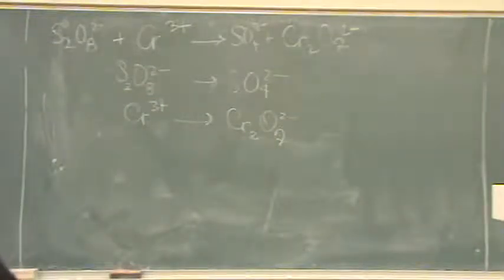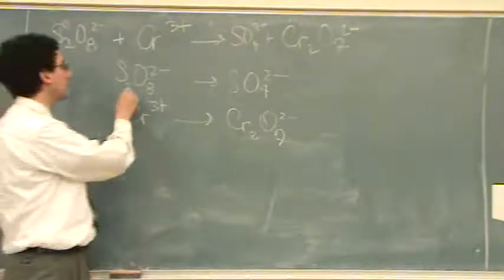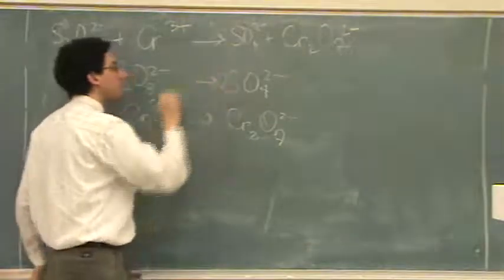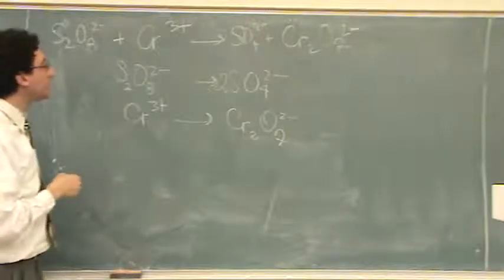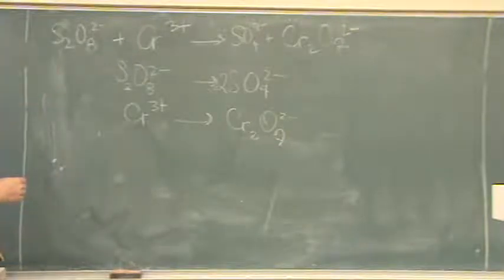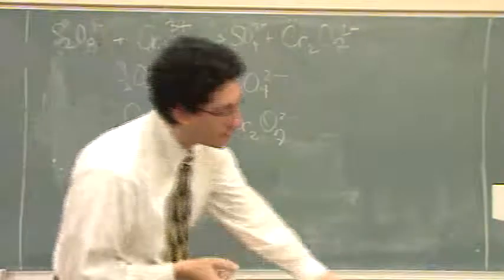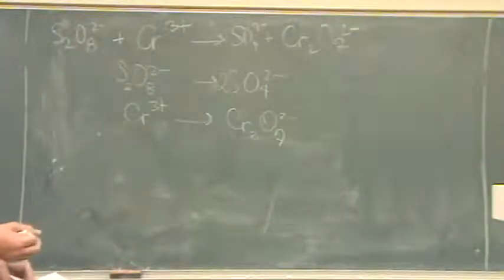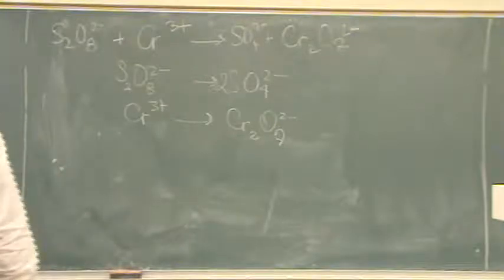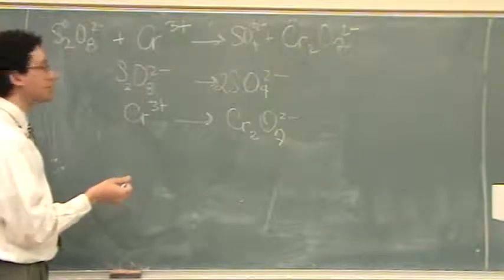Okay, let's do the one on the top. There's four steps in balancing. First, you balance anything that's not oxygen or hydrogen. So that's sulfur. You better have two sulfate ions because you have an S2O8. Then let's see what we have left. We have eight. Yeah, so we have oxygen. It's balanced. Then we have hydrogen. There's no hydrogen, so we skip that. So what's left?